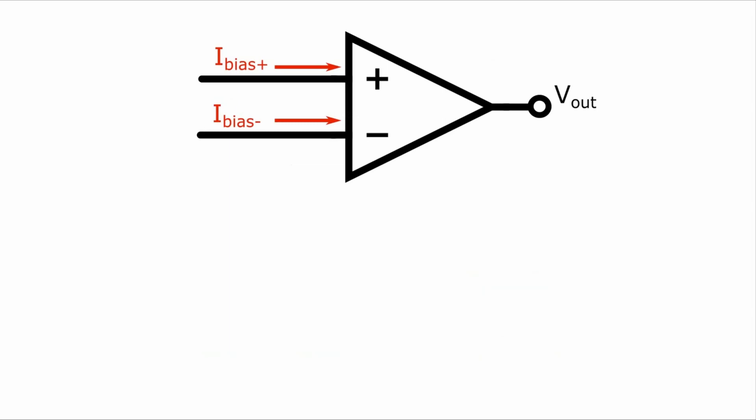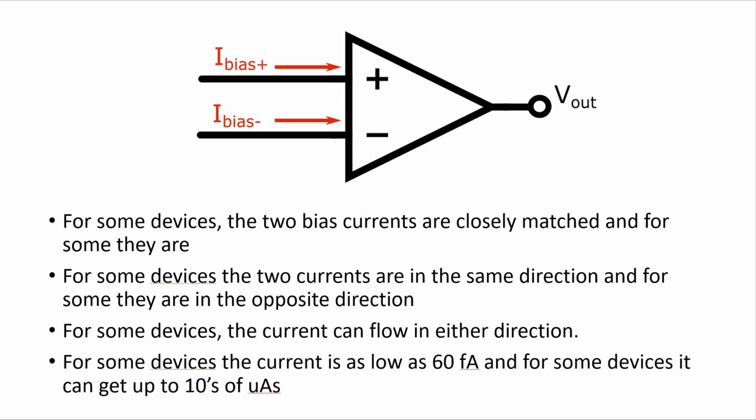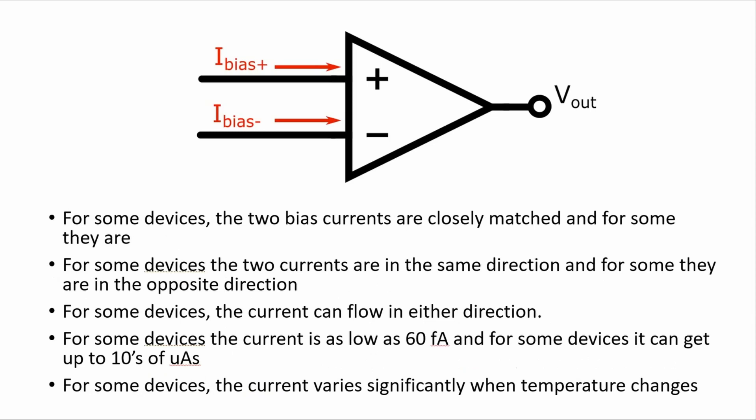Now input bias current is something that we don't want. It adds a DC error to our system, but there is no general method for minimizing the effect of input bias current because there's no consistency in the nature of bias currents for different devices. They can vary in direction, cause, value, sensitivity to temperature. So for some devices, the two bias currents are closely matched and for some they're not. For some devices, the two currents are in the same direction and for some they're in opposite directions. For some devices, the current can flow in either direction. For some devices, the current is as low as 60 femto amps. And for other devices, it can get up to tens of micro amps. And for some devices, the current can vary significantly when the temperature changes and for others, it doesn't.